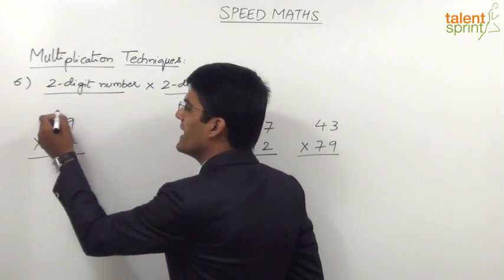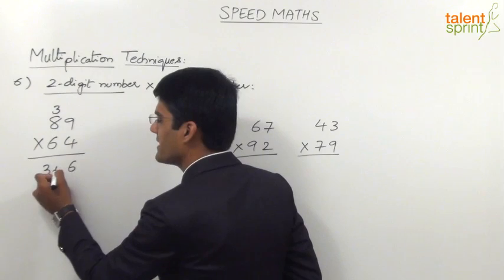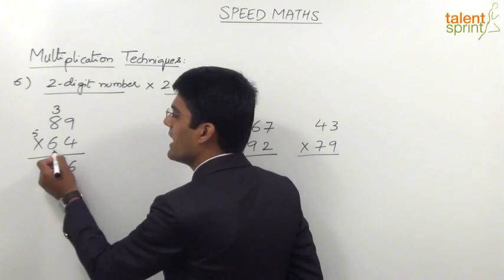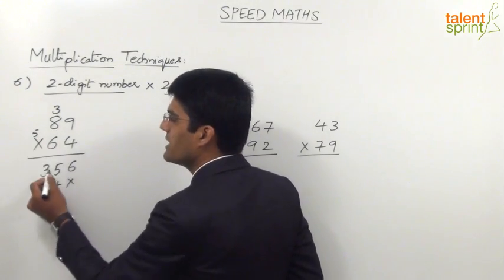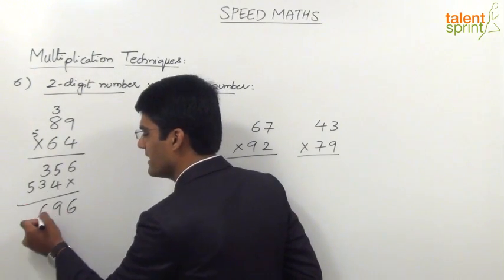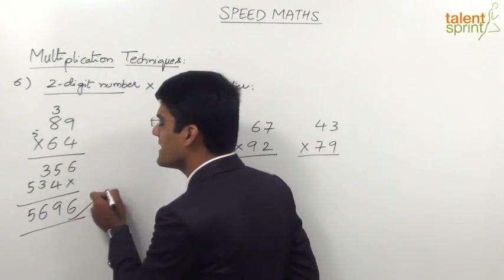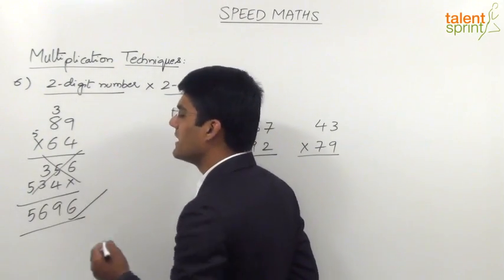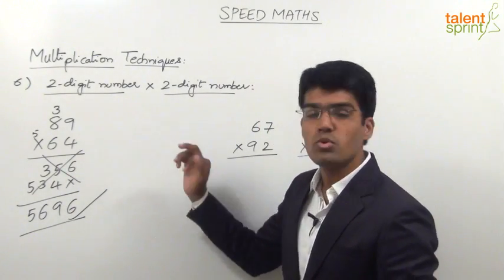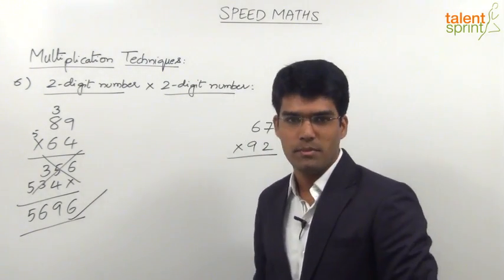For example: 4 into 9 is 36, then 4 into 8 is 32 plus 3 is 35, then 6 into 9 is 54, carry 5 forward, 6 into 8 is 48, 48 plus 5 is 53. The final answer would be 5696. The answer is correct but the method is lengthy because it involves a lot of steps. So let us understand how to multiply 89 and 64 without writing these many steps on paper.